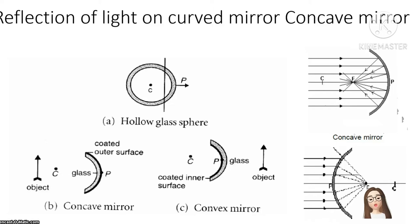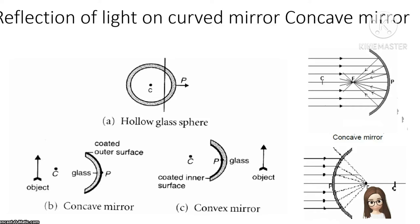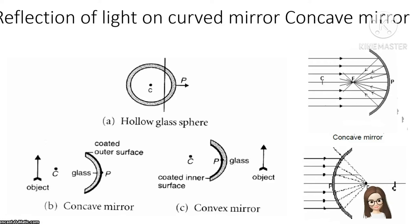How to form a spherical mirror: both the concave mirror and convex mirror are considered spherical mirrors. A spherical mirror is formed when you cut a sphere from a hollow glass. There are two surfaces. When you coat a layer on the outside surface — meaning the reflecting surface is outside — you get the concave mirror. If you coat a layer on the inner surface, meaning the reflecting surface is outside, you get the convex mirror.